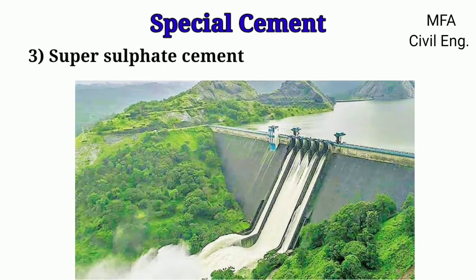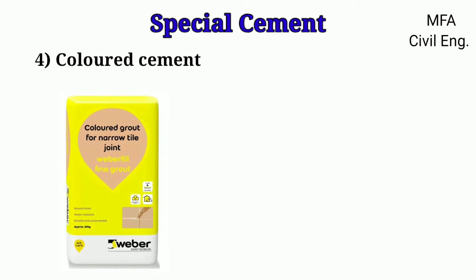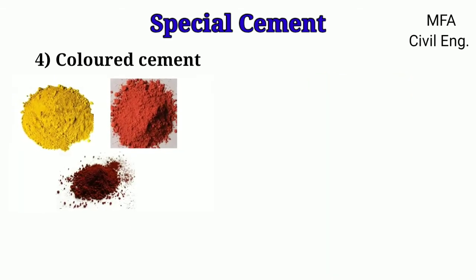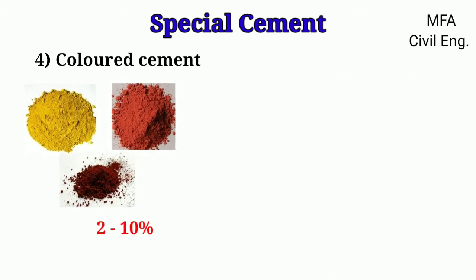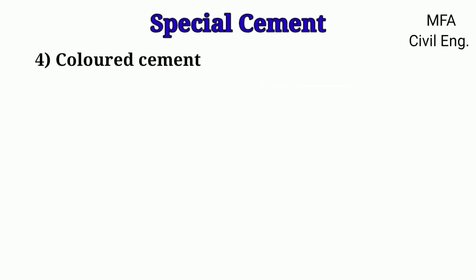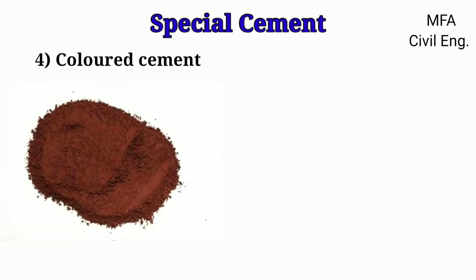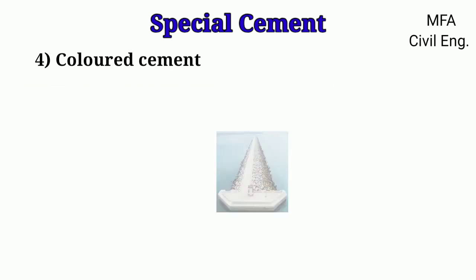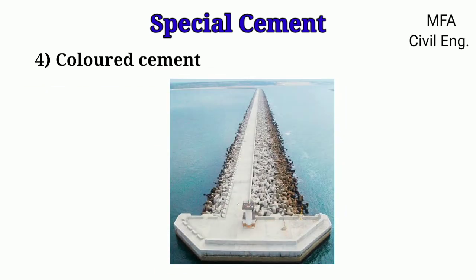Colored cement may be colored by means of coloring matters like yellow ochre, venetian red, and ferrous oxide. Color pigments of about 2 to 10 percent are added to ordinary Portland cement or white cement. In preparing colored cement, iron ore is completely or partially substituted for clay. This cement is employed in marine work on account of its resisting action against sea water. All colored cements set slowly.